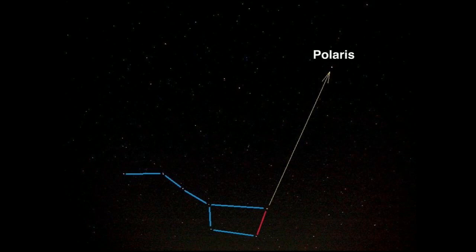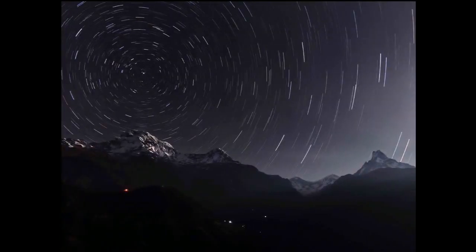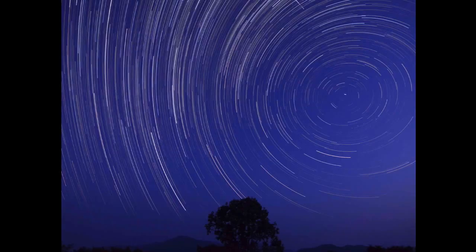And Polaris is the name of the star, but we know it as the North Star. And what's important about the North Star is that it's called a circumpolar star. And that name, circumpolar, literally means that other stars and celestial objects appear to rotate around it.